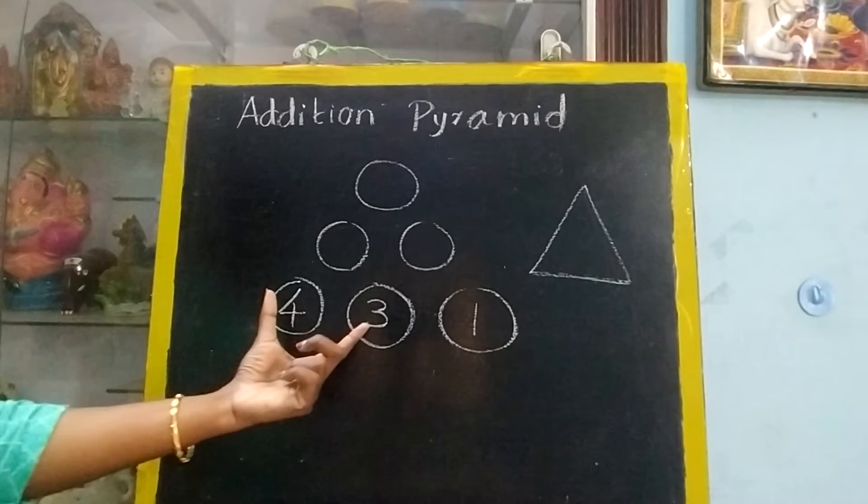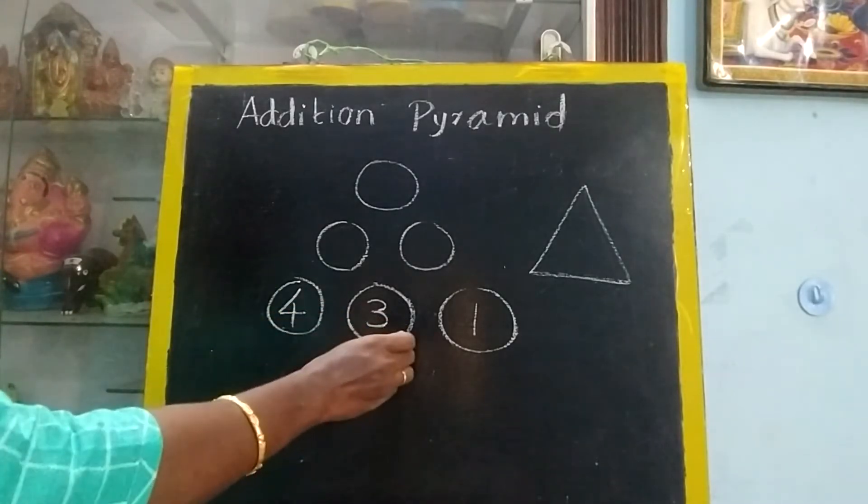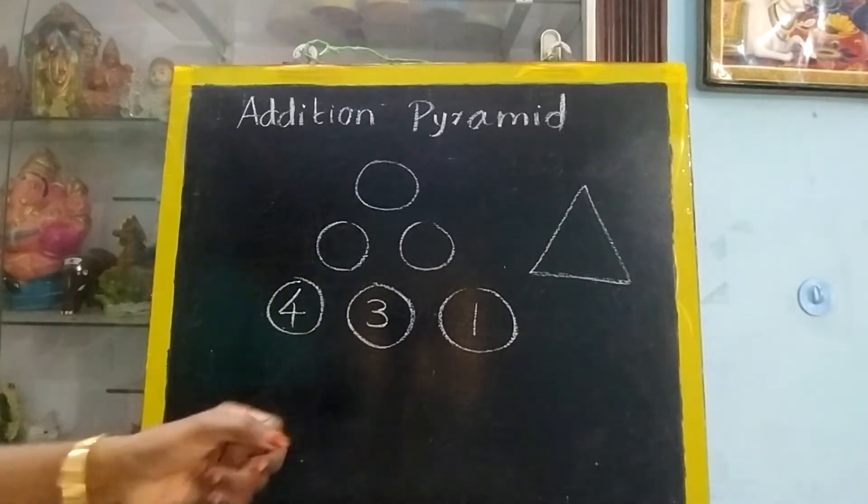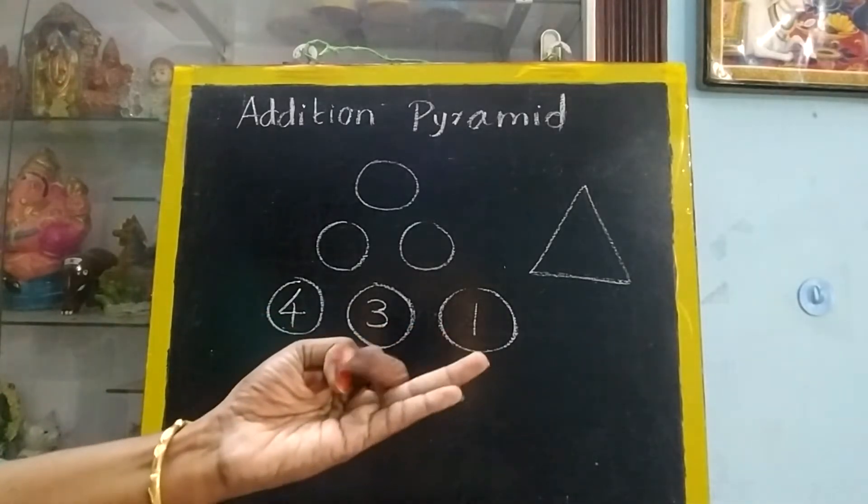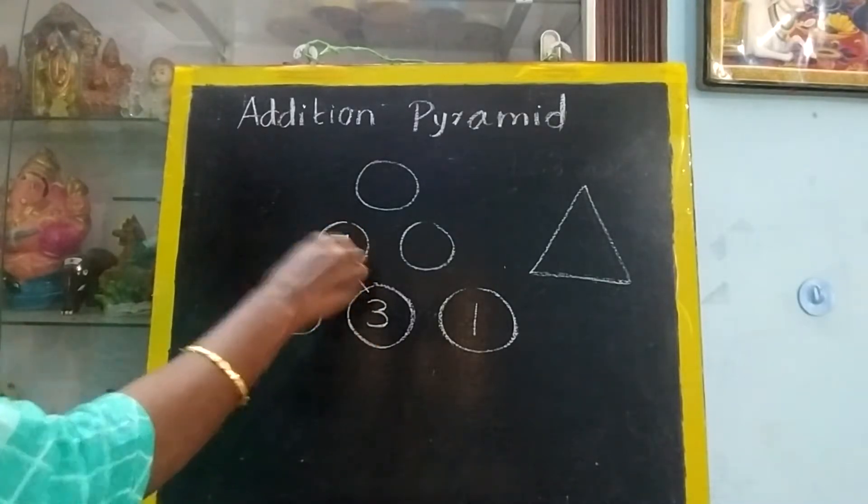You have to add the numbers which is nearby. These two circles you add 4 plus 3. 4 in the mind, 3 in the finger. After 4: 5, 6, 7. So these two you have to add and write in this circle.